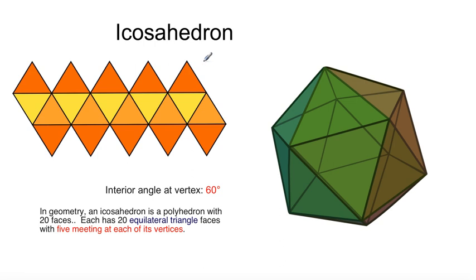Icosahedron. An icosahedron is a polyhedron with 20 faces. Each has 20 equilateral triangles, faces with five meeting at each of its vertices.